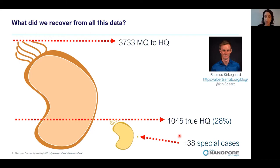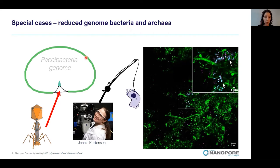We also had 38 special cases — reduced genome bacteria and archaea. One of the most interesting belonged to the Patescibacteria within the candidate phyla radiation. This organism was at about 6% relative abundance in one of our samples, which is quite exciting because no one had really visualized these organisms in situ for this particular class. So Jenny, now also at DOME Vienna, took up the challenge to visualize it in situ.